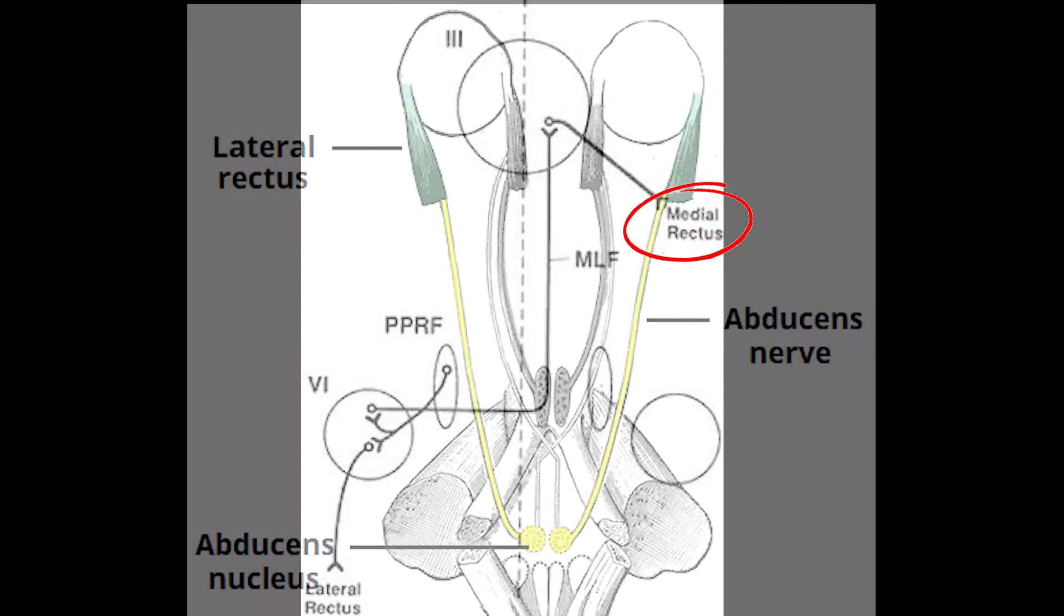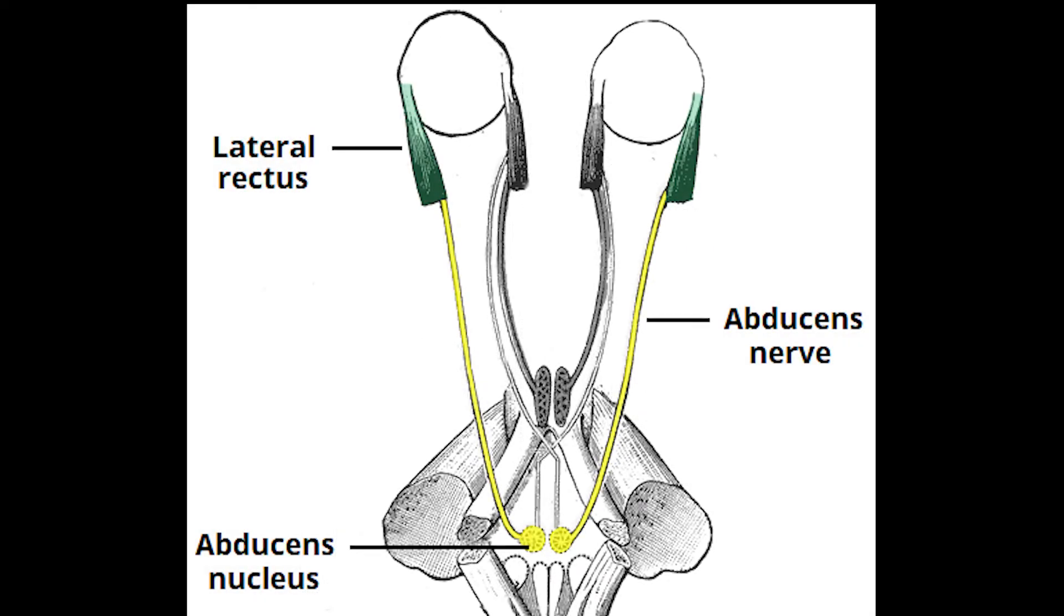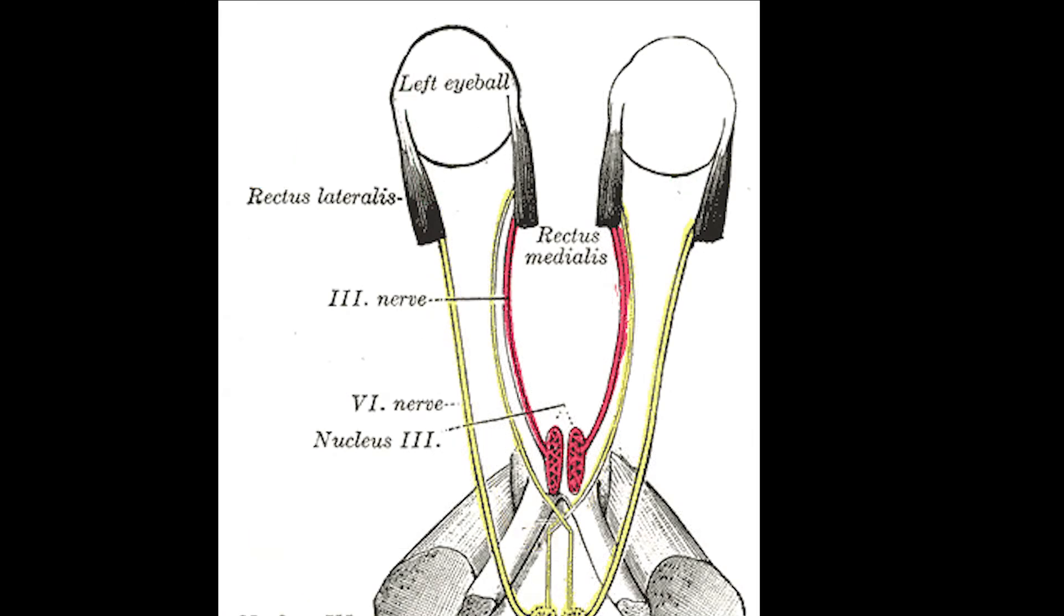So because of that, cranial nerve six is pulling one eye laterally and the opposite cranial nerve three is pulling the other eye medially, so you can look in the same direction.